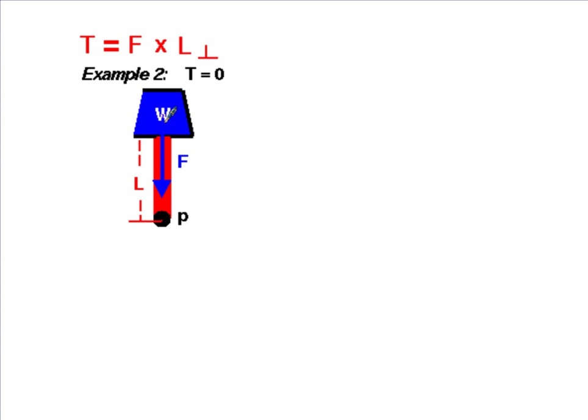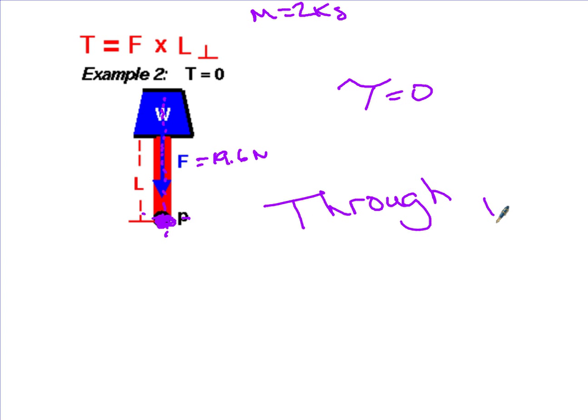What about this example? Here, let's assume we have the same mass of 2 kilograms, and I have a force acting down, and that force, in this case, is 19.6 Newtons. But in this case, the force runs through the pivot point. So the perpendicular distance between them is zero. So in this case, the torque is zero. Any time a force runs through your pivot point, through the pivot, then the torque is zero.